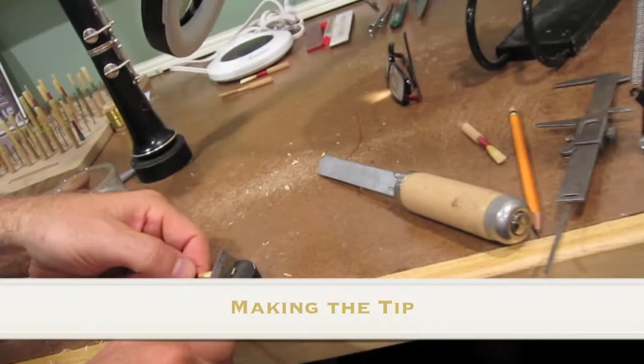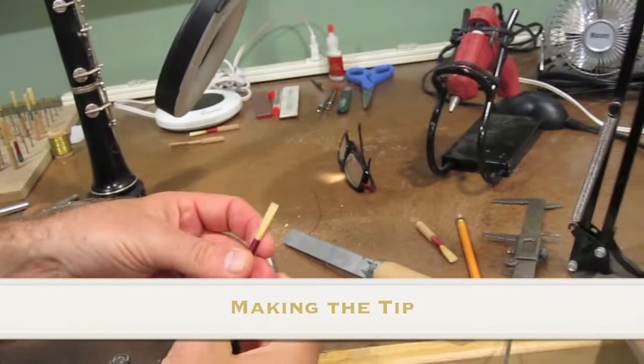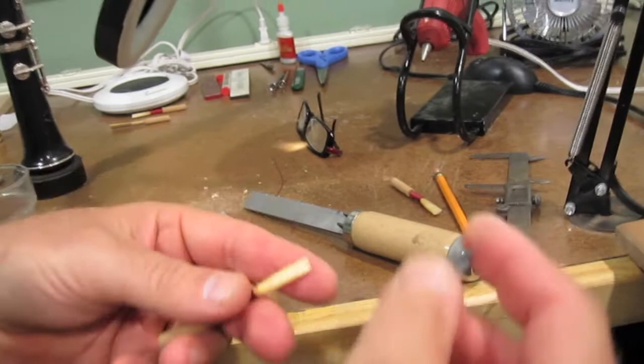Now I'm going to clip the tip. I take a sharp knife and bear straight down on the mark that I made to create a reed that's longer than you really need, but you need to have that room to spare.